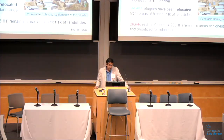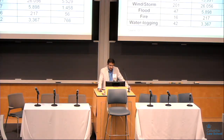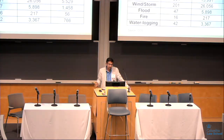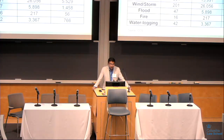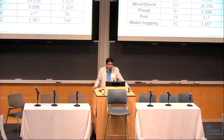However, 20,040 refugees still remain in vulnerable areas and are also prioritized for relocation. Disaster incidents in refugee settlements — most related to rainfall during the monsoon period of 11 May to 18 September 2018 — included: 334 incidents of landslides, 201 incidents of strong wind and storm, 47 incidents of flood, 16 incidents of fire, and 42 incidents of waterlogging.